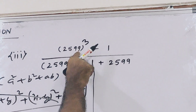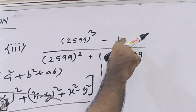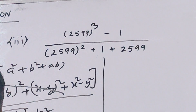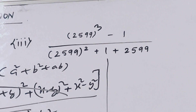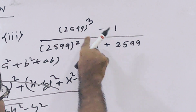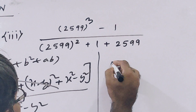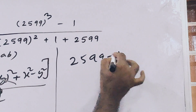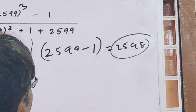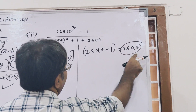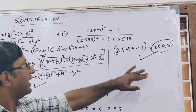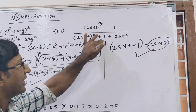Now see question three. This is 2599 cubed minus 1 cubed, over 2599 squared plus 1 plus 2599. You can say this is 1 cubed. This is also the formula a cubed minus b cubed, the same formula: (a-b) into (a squared plus b squared plus ab). So your answer directly is a minus b, that is 2599 minus 1, which equals 2598. The denominator cancels out. So 2598 is the correct answer.